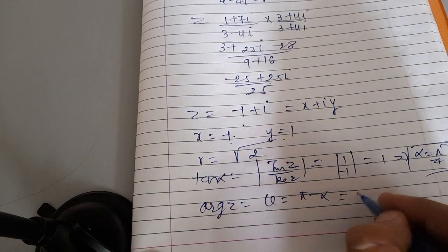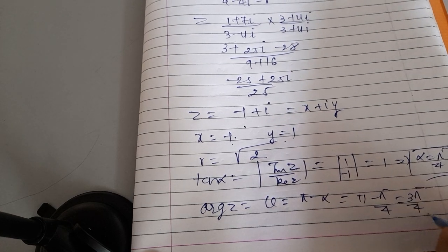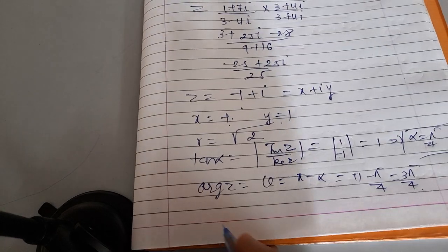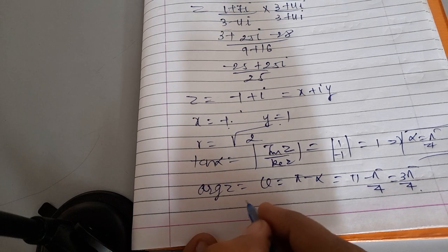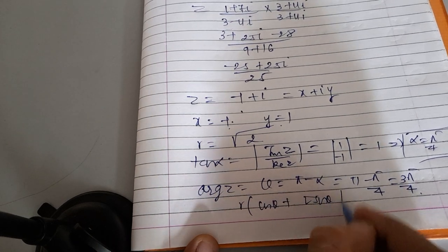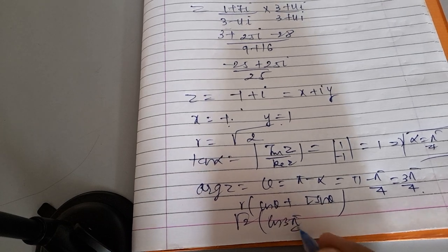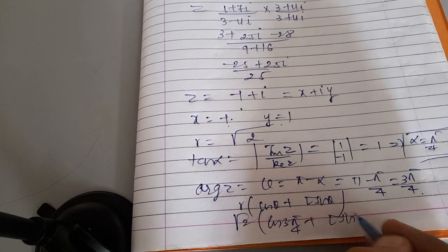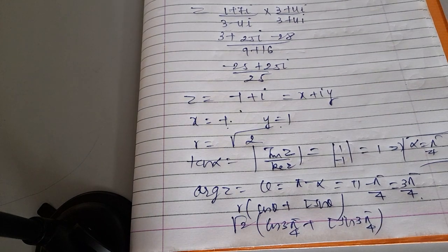The polar representation of a complex number is R(cos θ + i sin θ). Here R = √2 and θ = 3π/4, so the polar form is √2 (cos 3π/4 + i sin 3π/4). This is the answer.